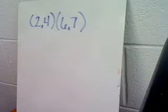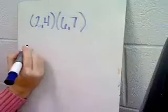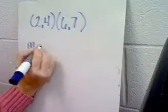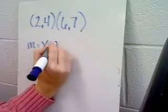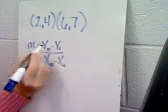Here's another example of how to calculate the slope of a line. I'm going to use my slope formula m equals y sub 0 minus y sub 1 over x sub 0 minus x sub 1.